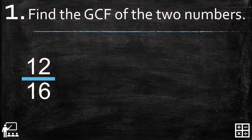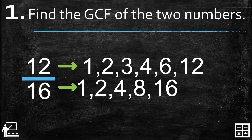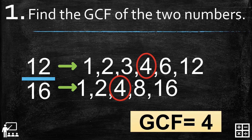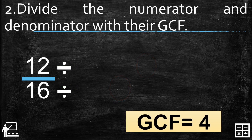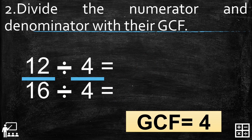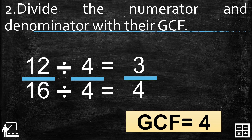Example number 4: 12 over 16. I'll give you the factors of 12 and 16 — can you guess the GCF? That's right, it's 4. The GCF of 12 and 16 is 4. Dividing by 4 over 4: 12 divided by 4 and 16 divided by 4 gives the lowest term of 12 over 16 as 3 fourths.